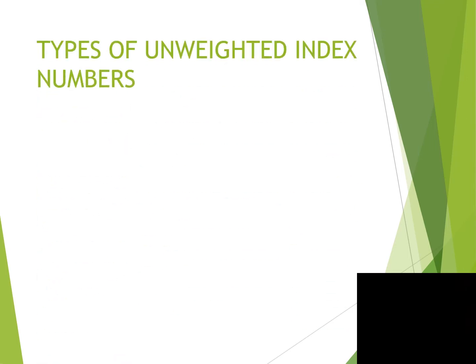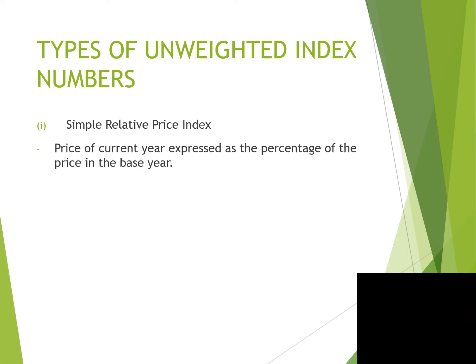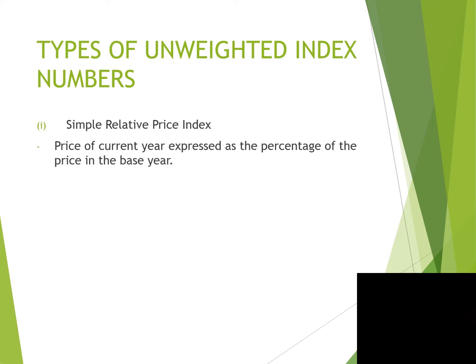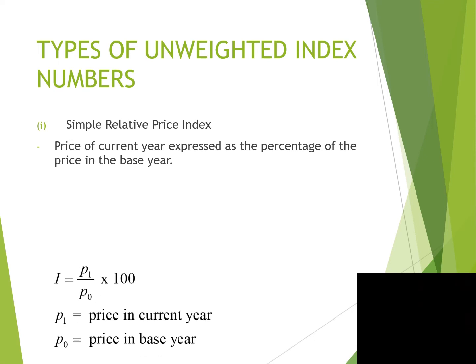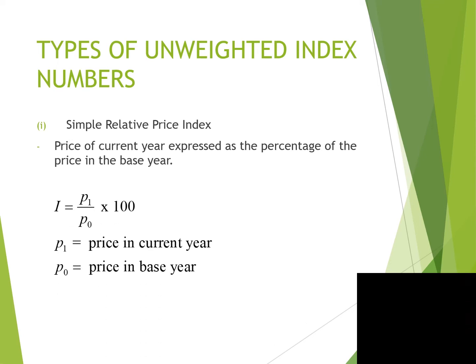Type of Unweighted Index Number — Simple Relative Price Index: The price of the current year is expressed as a percentage of the price in the base year. Formula: I = (P₁ / P₀) × 100, where P₁ is the price in the current year and P₀ is the price in the base year.